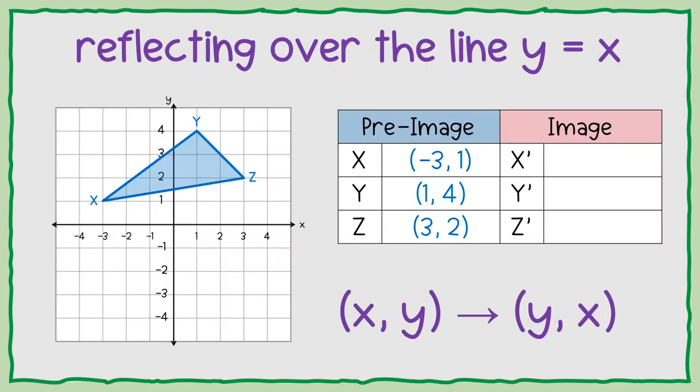So let's just start with examples. Instead of having you do an example and try to figure out what the rule is, I went ahead and just gave us the rule already. So the rule is when you're reflecting over the line y equals x, your point, you're just going to flip the numbers.